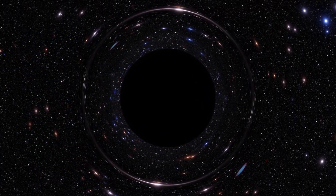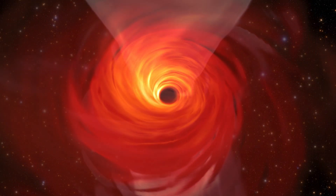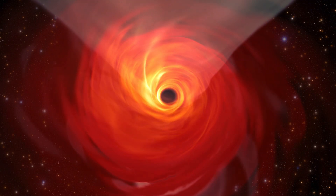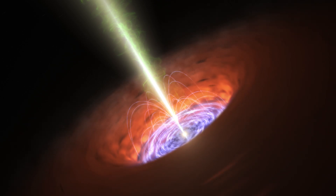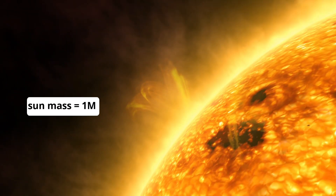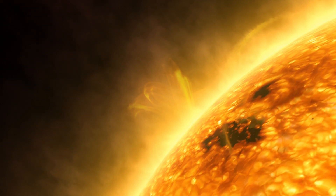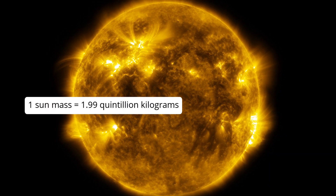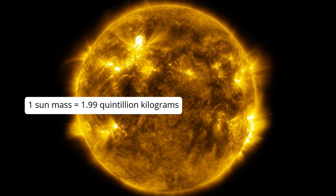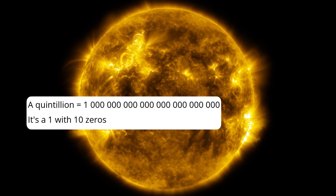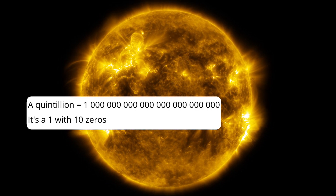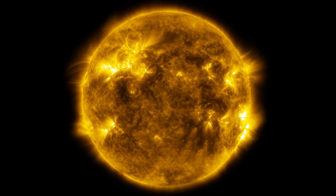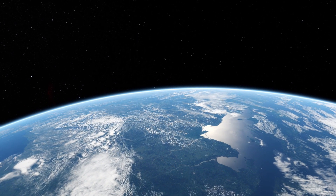Anything that falls into a black hole is pulled to a point in the center with an unknown fate. The mass of a black hole is so large that we express it in solar masses. One solar mass, 1M☉, is equal to the mass of our Sun — approximately 1.99 quintillion kilograms. A quintillion is a one with 10 zeros, corresponding to approximately 332,946 times the mass of the Earth.